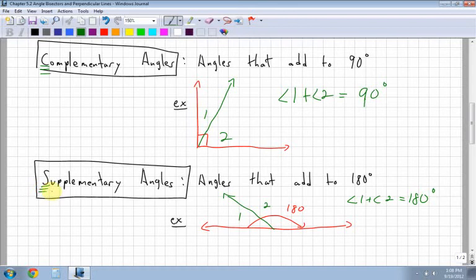The way I've remembered this in the past is that complementary starts with a c. Supplementary starts with an s. Complementary, because c comes before s in the alphabet, it's going to be the smaller one. Supplementary is the bigger one. So, complementary adds to 90. Supplementary adds to 180.